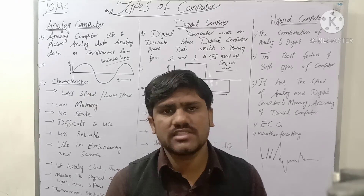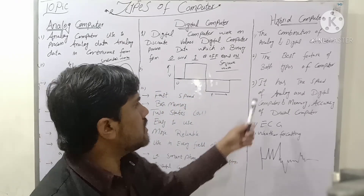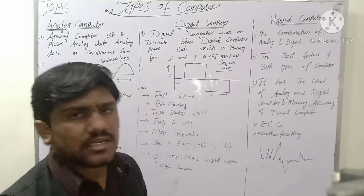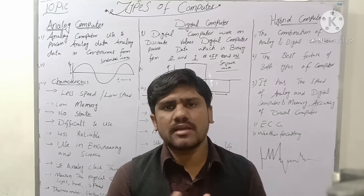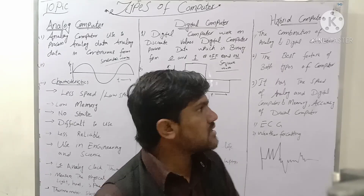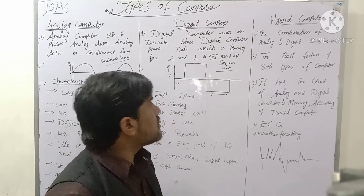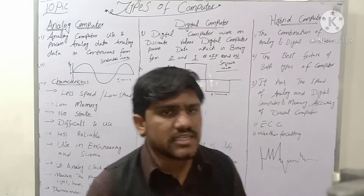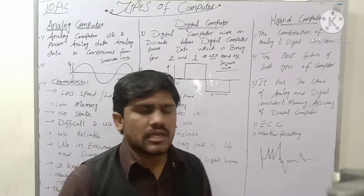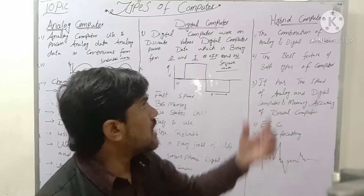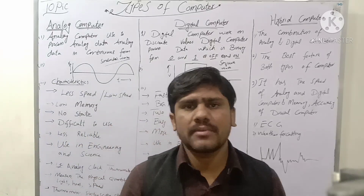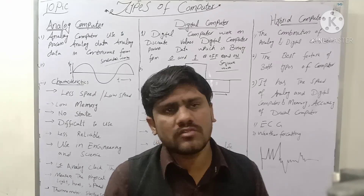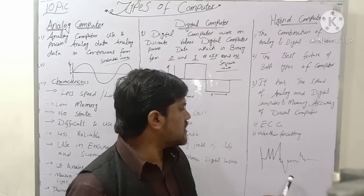The hybrid computer has the speed of analog and digital computers and the memory accuracy of a digital computer. These computers are used in ECG and weather forecasting. For example, when a patient undergoes an ECG, the waveform is displayed in this hybrid form.